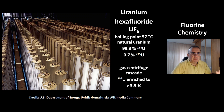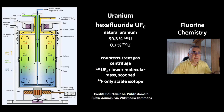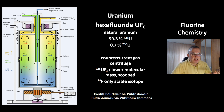Uranium hexafluoride is another very important compound for the nuclear industry. UF6 has a boiling point of 57 degrees Celsius. Natural uranium contains just 0.7% of the isotope U-235, which is the isotope needed for the fission reaction. This picture shows a gas centrifuge cascade used to enrich uranium to over 3.5% isotope U-235. This principle works only because there is just one stable isotope of fluorine — fluorine-19 — so the mass difference of the uranium isotopes determines the separation in this process.